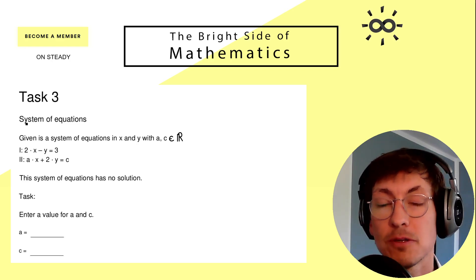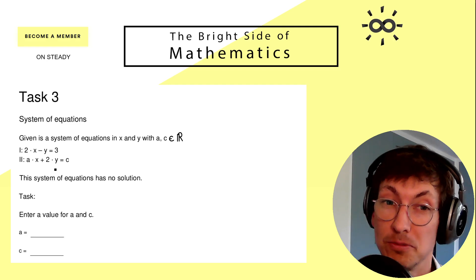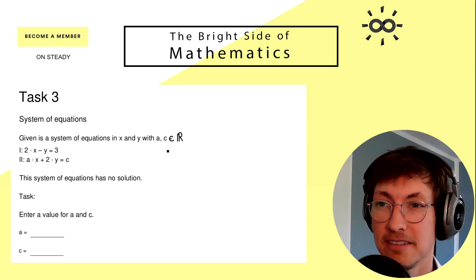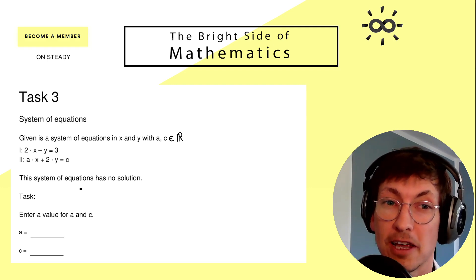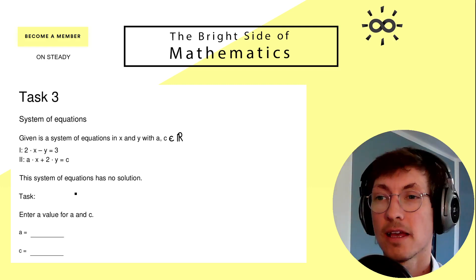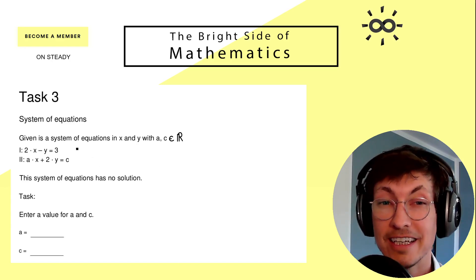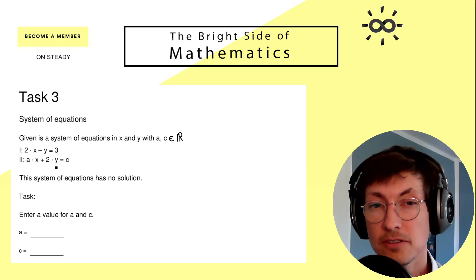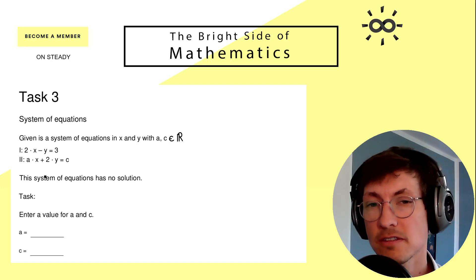This is about system of linear equations. You see we have two parameters a and c from the real numbers, and the statement is that this system should have no solution at all. The problem I see immediately is that often, since we only have two equations, we put them together in some sense and then something comes out by some calculations.